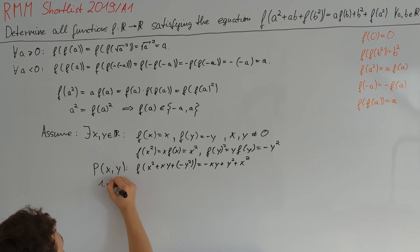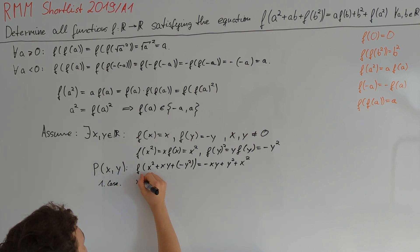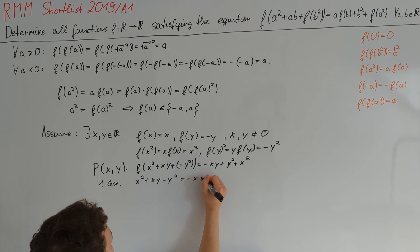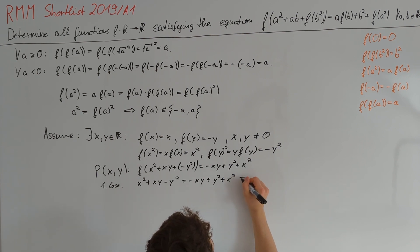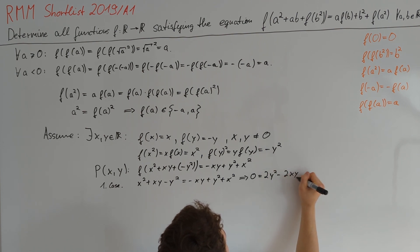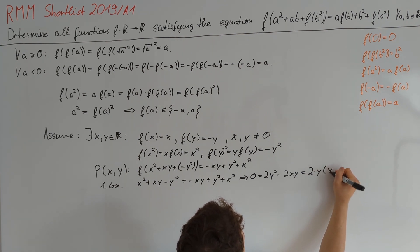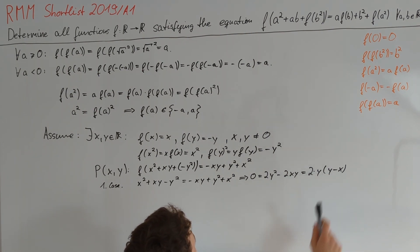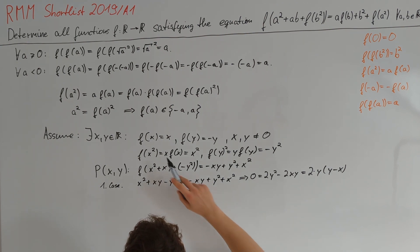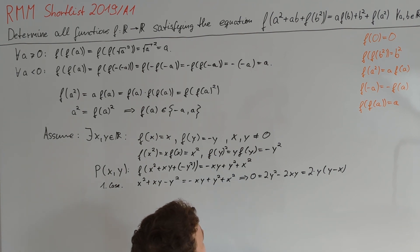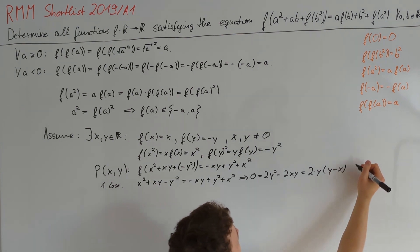Case 1: x² + xy − y² = −xy + y² + x². Bringing everything to one side gives 0 = 2y² − 2xy = 2y(y − x). Since y ≠ 0, we get x = y. But then f(x) = x and f(x) = −x, so x = −x, contradicting x ≠ 0.